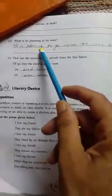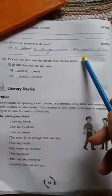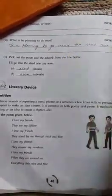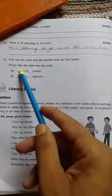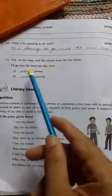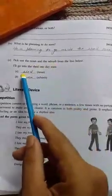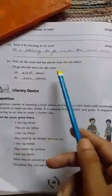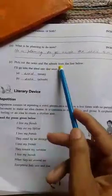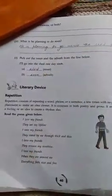What is he planning to do soon? He is planning to go inside the shed. 'I will go into the shed one day soon.' You have to find the noun and the adverb. Noun is 'shed,' name of a place, and the adverb is 'soon,' adverb of time.